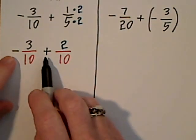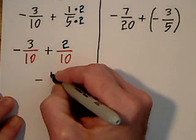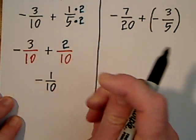The signs are different. You subtract, keep the sign of the larger, so you end up with a negative one-tenth.